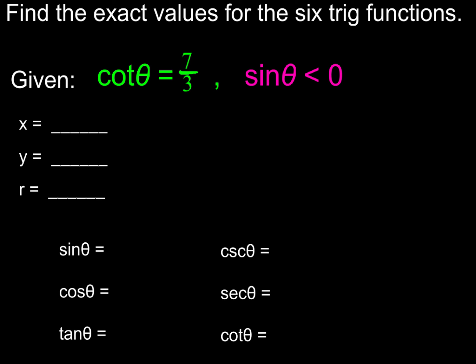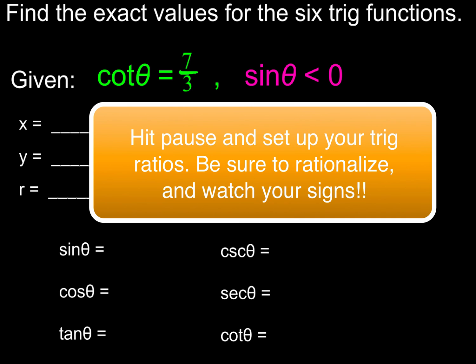Now here, cotangent is 7 thirds, and sine has got to be less than 0, or sine's got to be negative. Go ahead and fill in as much information as you can on x, y, and r. And in fact, I think you could probably do this whole problem on your own by now. So go ahead, get after it, and let's see what you come up with.